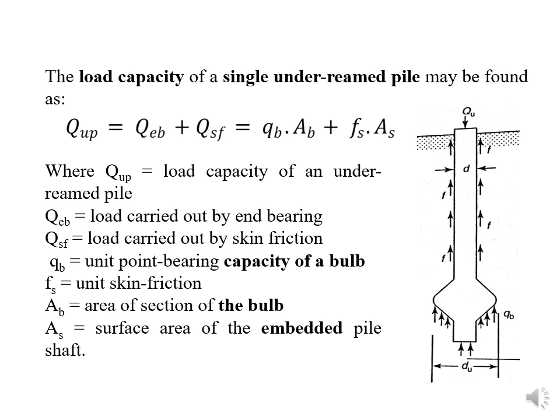You can see the single underreamed pile diagram. DU means the diameter of the underream, and this is the diameter of the shaft. F represents the skin friction — the load carried by the perimeter of the pile shaft. QP is the load capacity of a single underreamed pile. QB is the stress developed at the base of the bulb. We take these diameters to understand how the pile takes the structural load and how bearing capacity increases.